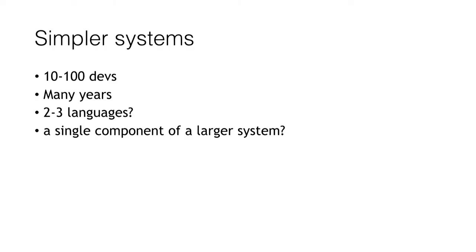Somewhat simpler is a system with fewer than 100 devs and a couple of languages — probably a single component of a larger system. If this is what you're working on, you might have an approach that looks like: once a quarter, check in and see if your threat model is up to date. Initially, maybe spend a couple of hours. For a simpler system, a couple of hours; for a larger, more complex system, maybe a couple of hours every quarter just to update it. The most valuable work comes out pretty early on — eventually you hit diminishing returns and it's time to wrap up and revisit next quarter.